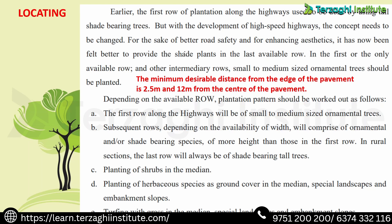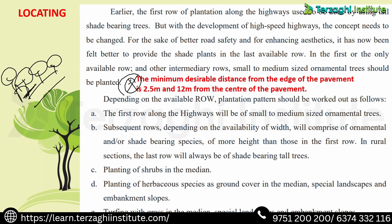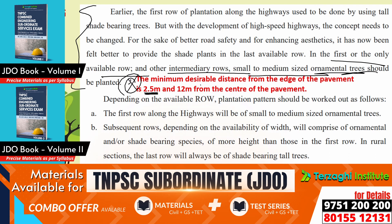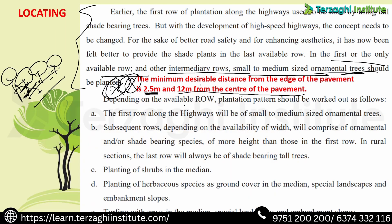Regarding how to locate trees: along the road there are shade trees. The minimum desirable distance from edge of the pavement is 2.5 meters. Trees are planned at 12 meters from the center of the pavement. This is a very important point to note about how trees are arranged along highways.